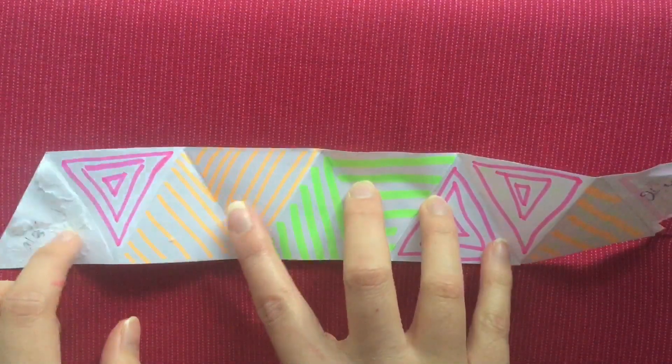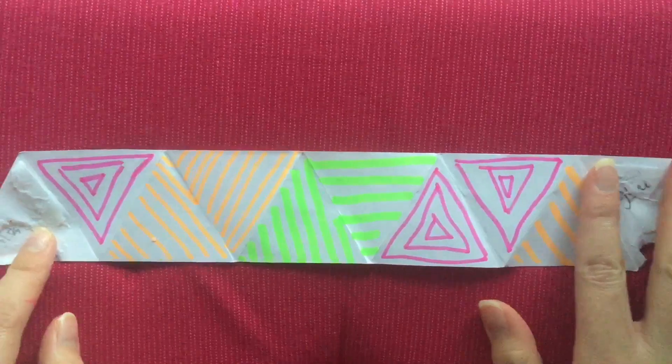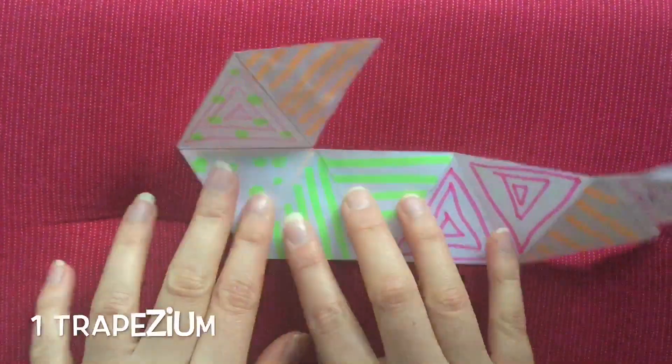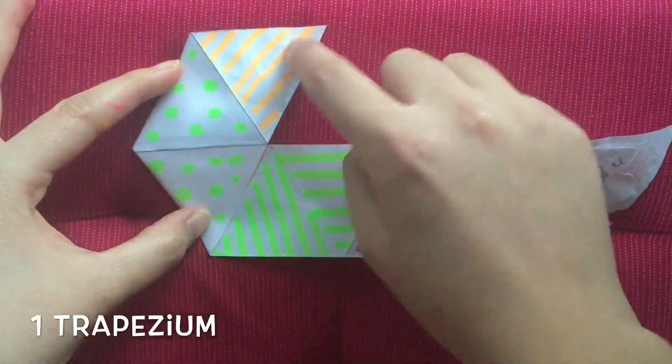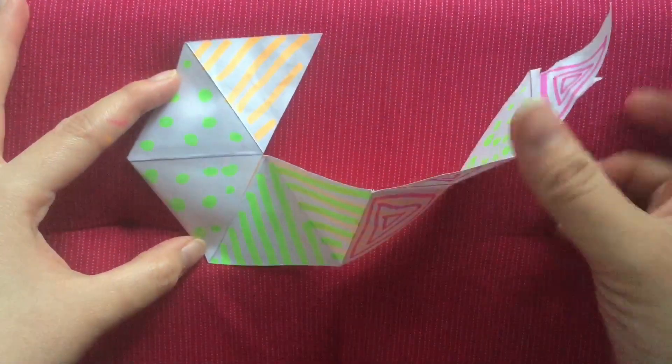To begin, make sure the triangle on the left is facing up, then fold upwards up into the fourth triangle so that you have one trapezium.